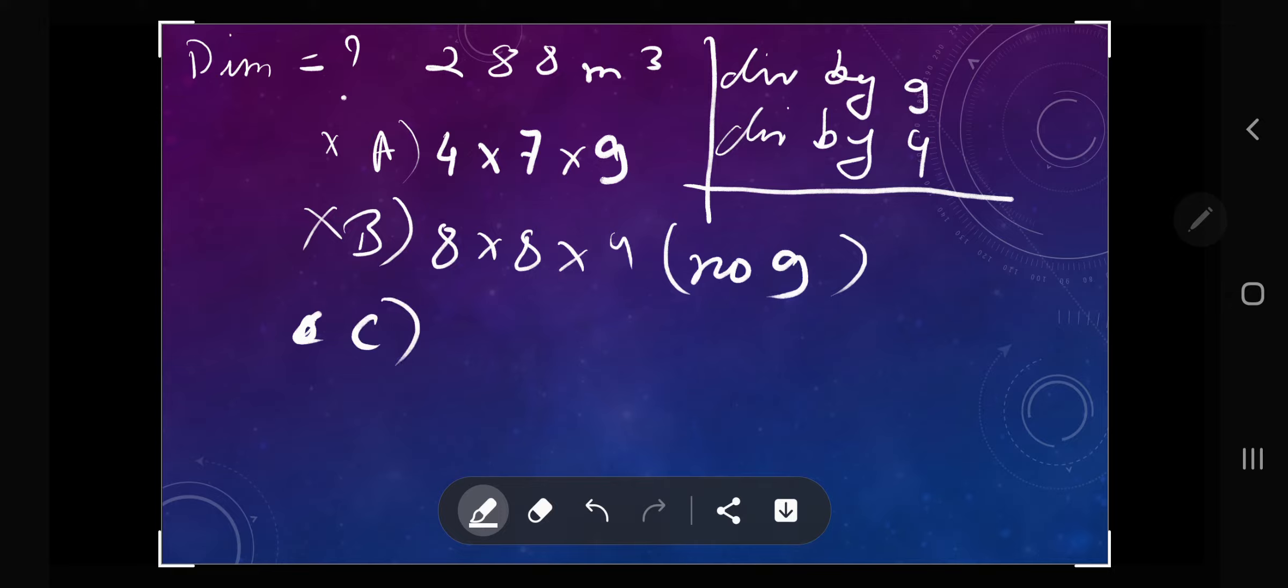Let's take a look at C. We have 8 times 9 times 4. Yes, we have 9, so that's good. We have 4 as well. How about 8? If we take 288 and divide it by 4, we get 72. Is 72 divisible by 8? Yes, 8 times 9 is 72. And if we see, the product of these is 288. Therefore C is our answer.